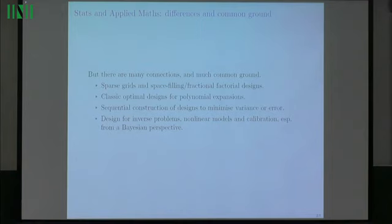But there are lots of connections and a lot of common ground. So, sparse grids and their connections through to space-filling designs and also fractional factorial designs, taking subsets of full factorials. Back in the 50s, Kiefer worked on optimal design problems for essentially polynomial models, which are connections through to the points you would choose for various sorts of polynomial expansions. There's the sequential construction of designs. Max talks about reduced basis methods and how you can choose the next essential run of your computer model to minimise some error, and in statistics, it's a simple criterion for sequential design is to pick your next design point to minimise your variance, and they are very similar things. And obviously, design for inverse problems, non-linear models, and calibration, that's essentially being done right now by both communities, particularly from a Bayesian perspective.